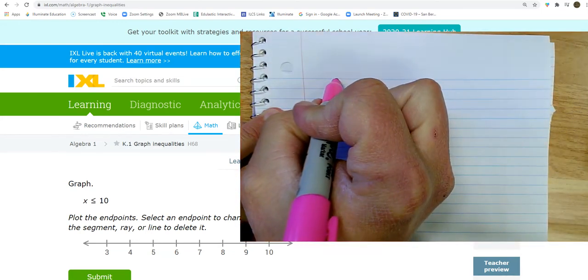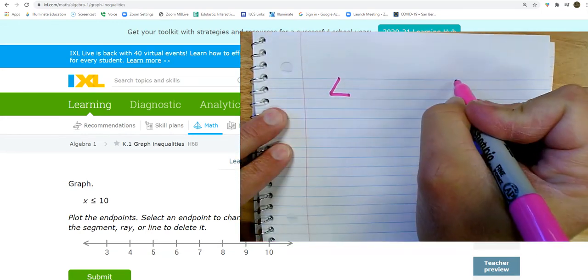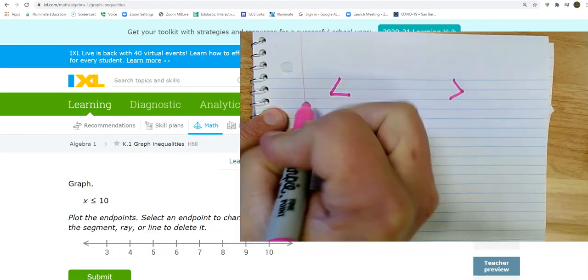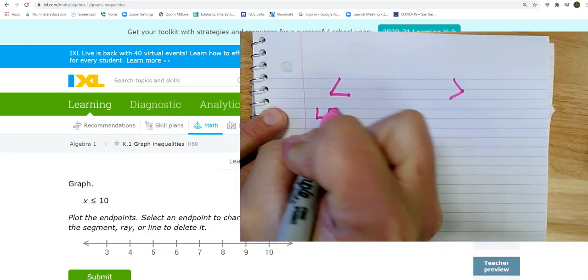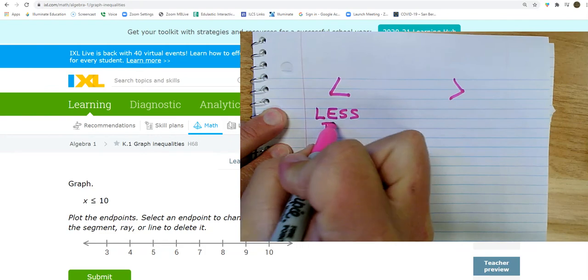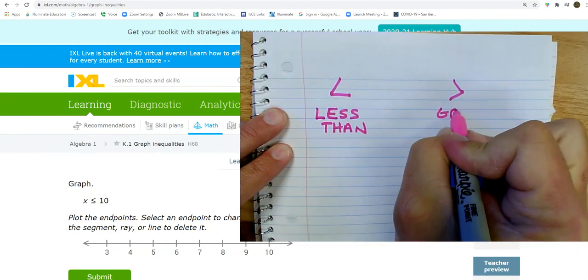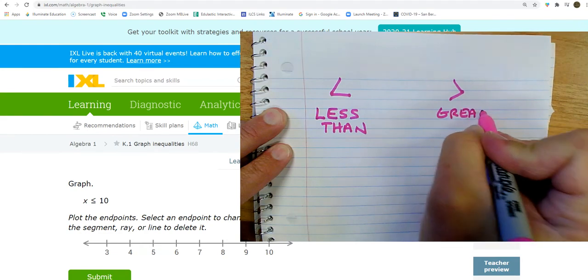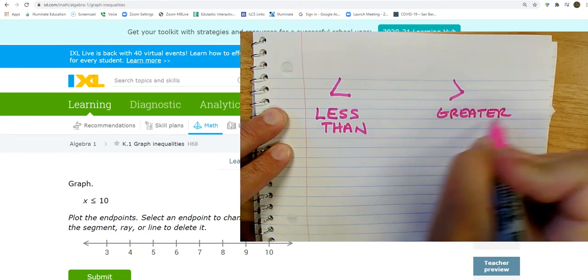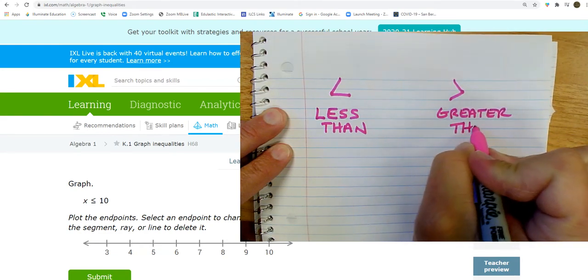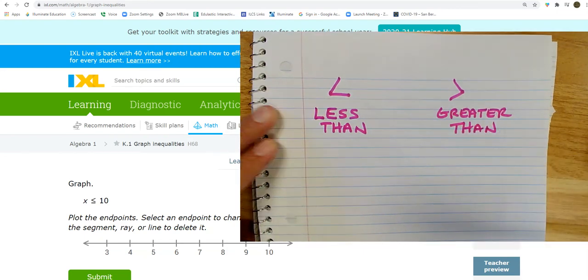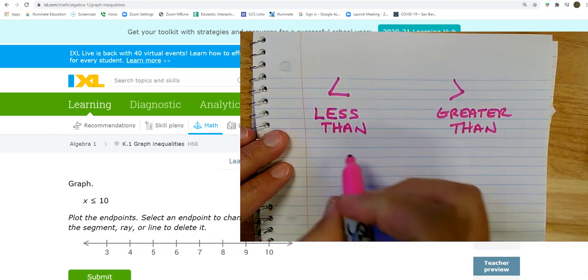So, we've got these two symbols right here. This is less than. And this is greater than, and those symbols do not change.